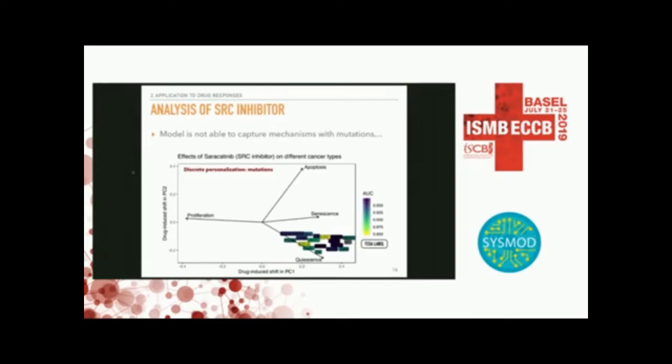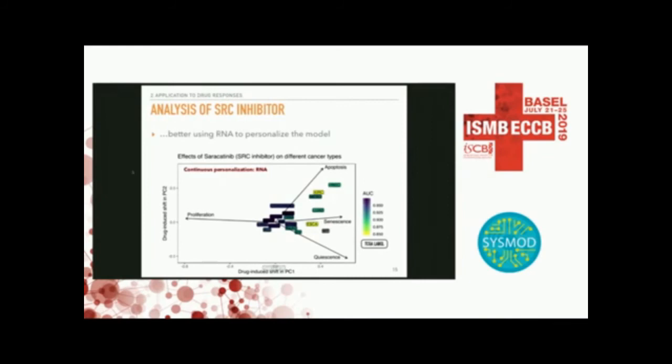The second example uses Saracatinib, a SRC inhibitor. When we personalize the model with mutations only, it makes no sense — kidney cancer is supposed to be very sensitive to that drug, but we are not able to distinguish its behavior. However, if we use RNA data to perform the continuous personalization, it makes much more sense: we can distinguish kidney cancer, head and neck cancer, and lung cancer, which have a quite important drug-induced shift towards senescence. So in this case, the mechanistic explanation may rely on RNA rather than mutations — though it could be any other data type.